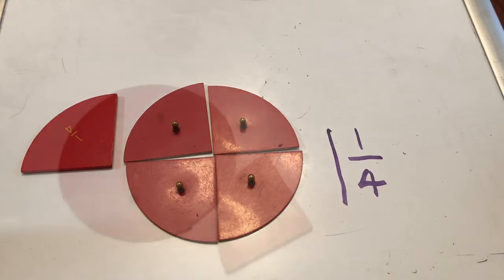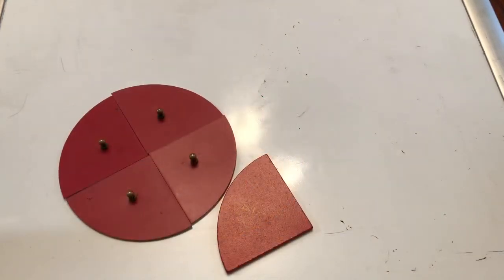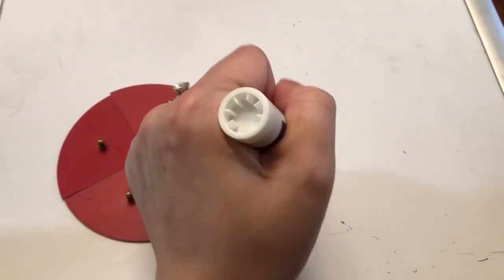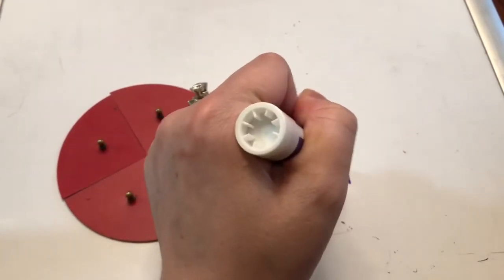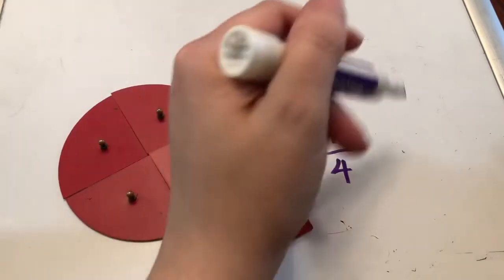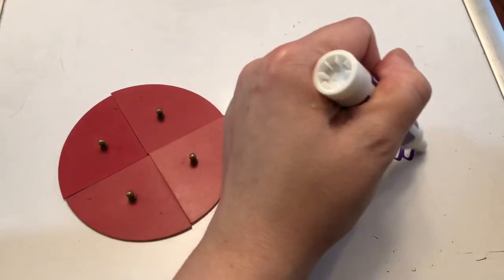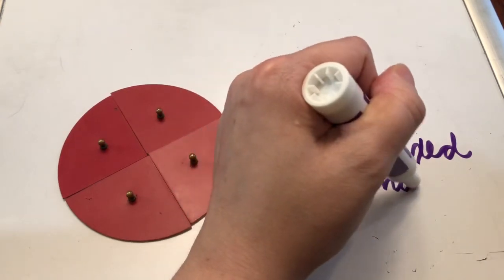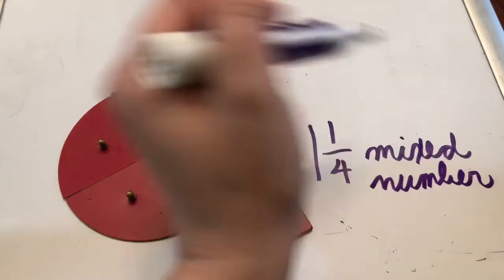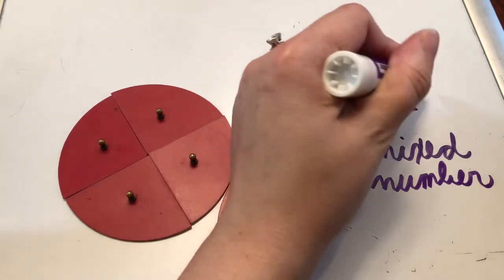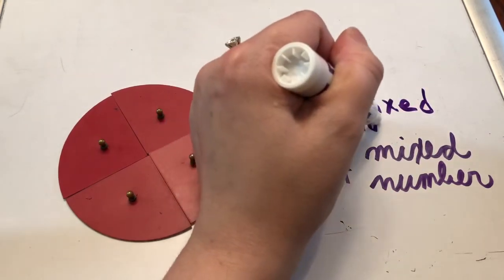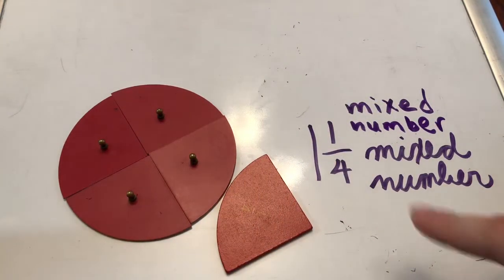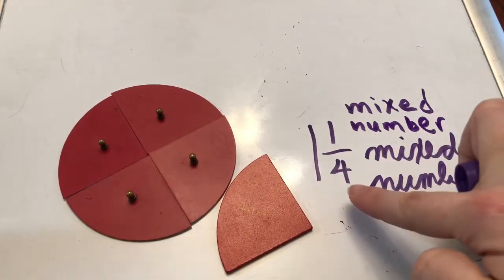Let's take a look at another example. I wanted to make sure that I said that one and one fourth is a mixed number. It's called a mixed number because it has a whole number and a fraction.